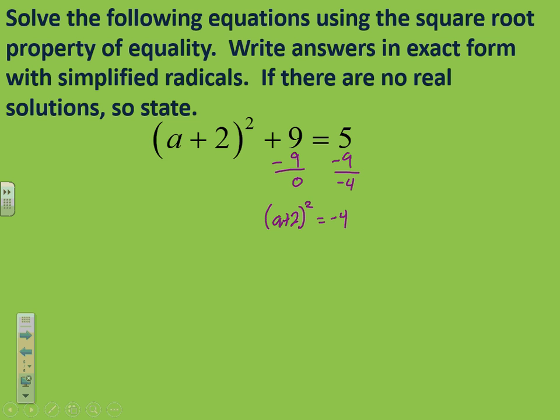Now, at this point, we're going to take the square root of both sides. Hey, look, we're trying to take the square root of a negative number. So, here, in the instructions, the answer's in exact form, and if there are no real solutions, so state. Well, guess what? Because we're taking the square root of a negative number, that tells you that there's going to be no real solutions. So, right off the bat, we're going to say no real solutions.